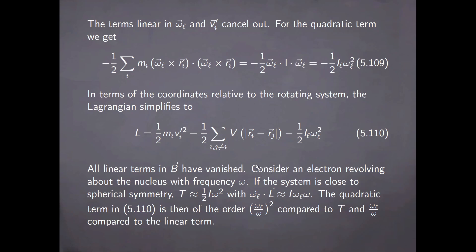We can consider now an electron revolving about a nucleus with some frequency omega. If the system is close to spherical symmetry, then the kinetic energy is approximately a scalar, while the dot product between the Larmor frequency and the angular momentum is approximately given by this value. The quadratic term in this expression is of the order omega_L divided by omega squared compared to the kinetic energy, and of the order omega_L divided by omega compared to the linear term.